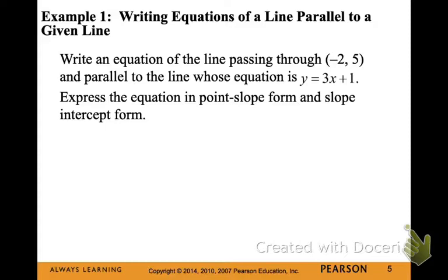So in example 1, let's write an equation of a line that's parallel to a given line. So we have a line that's passing through the point (-2, 5), and is parallel to the line whose equation is y equals 3x plus 1. So just by looking, we can see that the line that our new line is parallel to has a slope of 3.